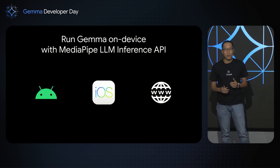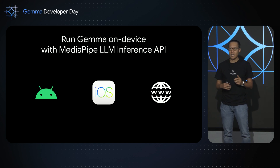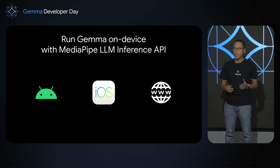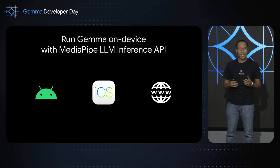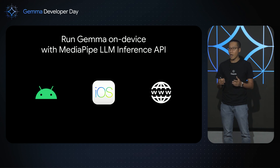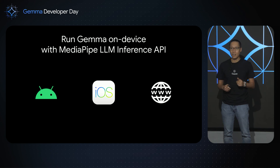MediaPipe LM Inference API enables you to run Gemma on-device with a very simple prompt-in-text-out API, so that you can quickly integrate Gemma into your applications. We support running Gemma on iOS, Android, and web. Let me show you how easy it is to integrate Gemma on each of our supported platforms.